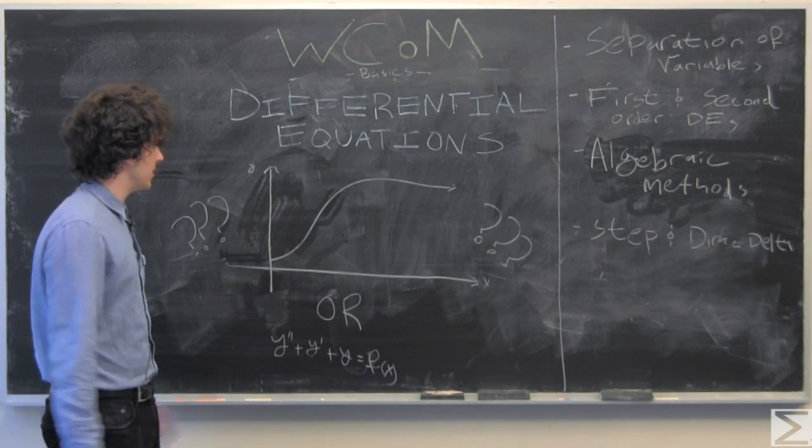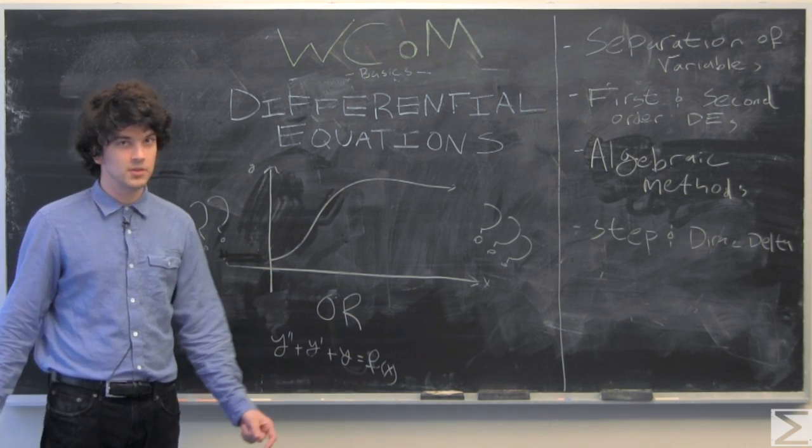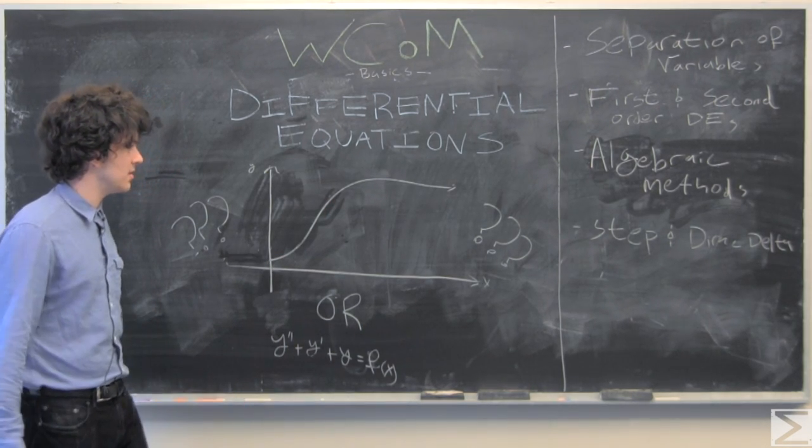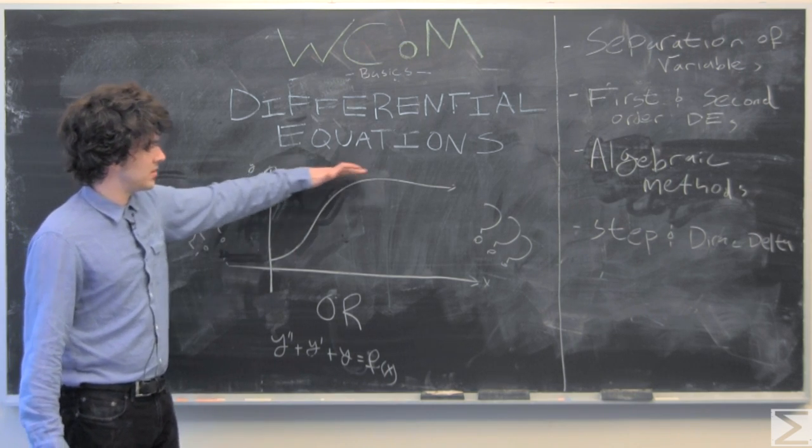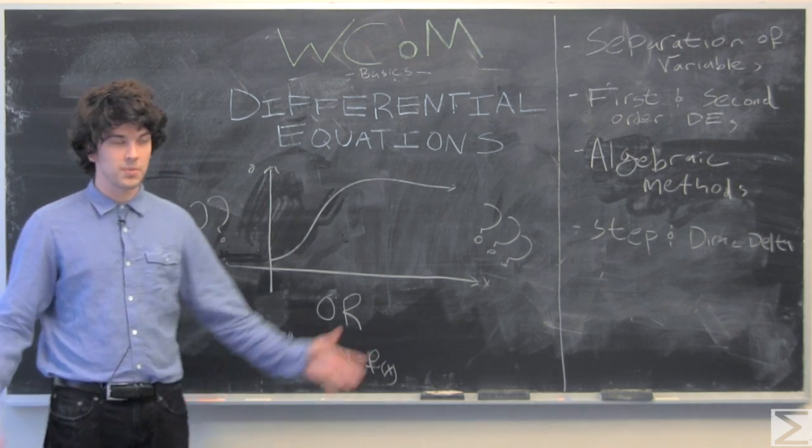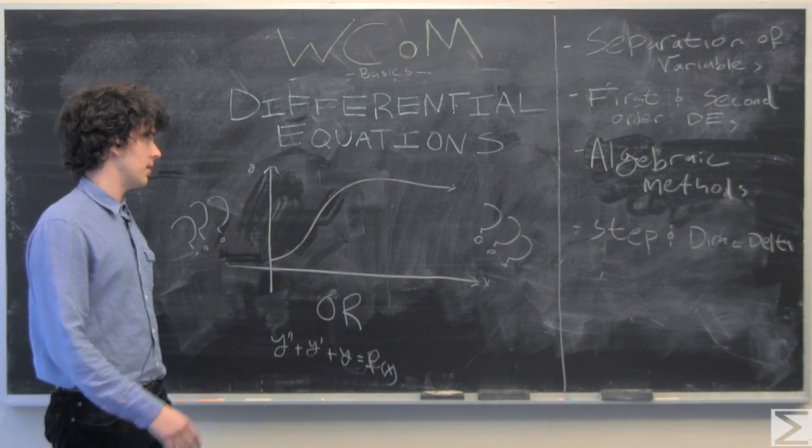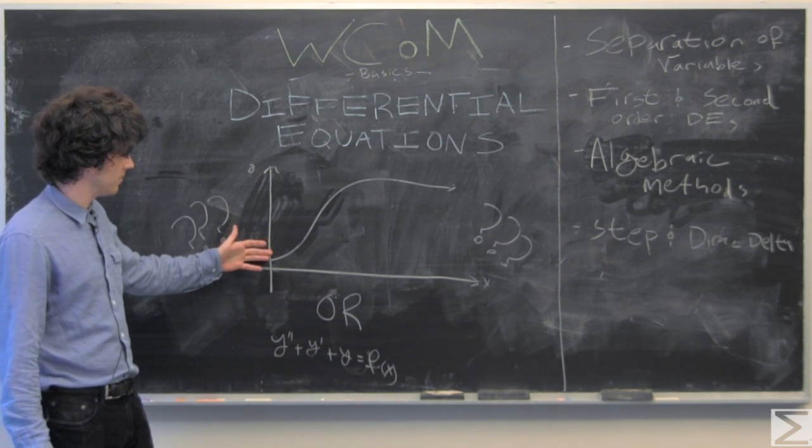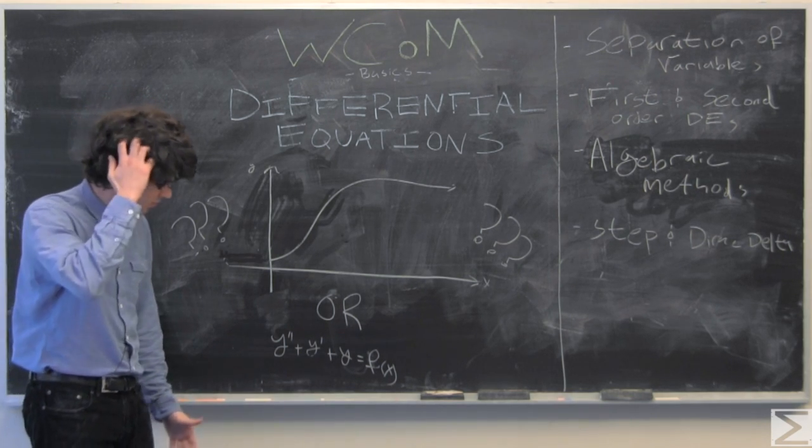Like here, you might recognize this shape as the logistic growth where the rate of change of some population is proportional to—there seems to be some limiting thing here—so it's proportional to like the cap of the population minus the current population or something like that.